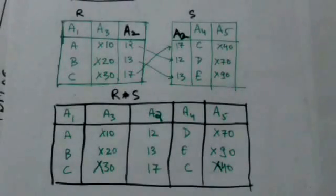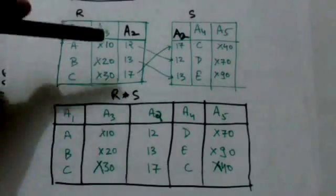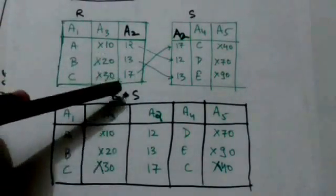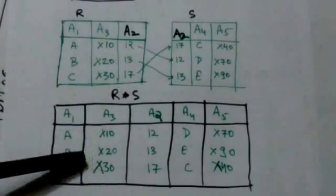Suppose there are two relations R and S. This is relation R, this is relation S. The result of this natural join operation is this relation.